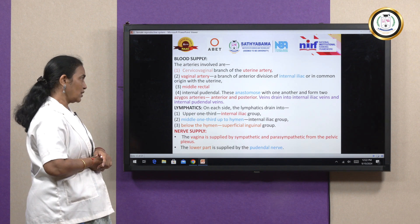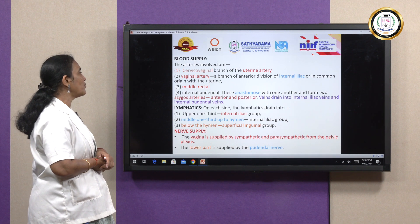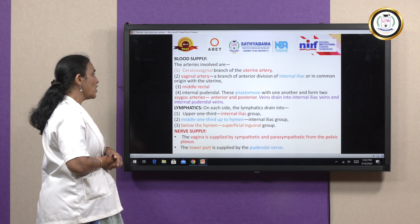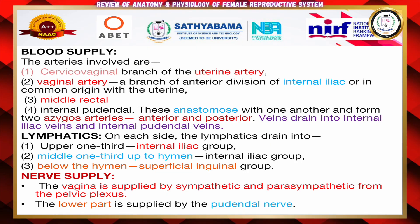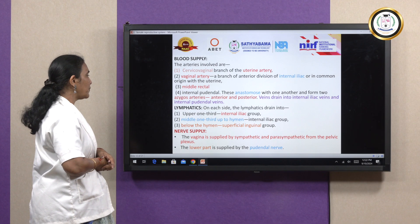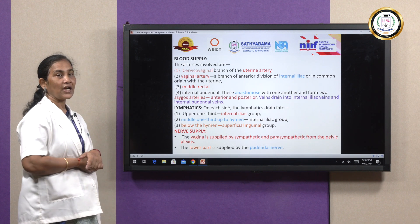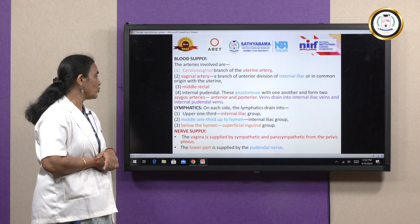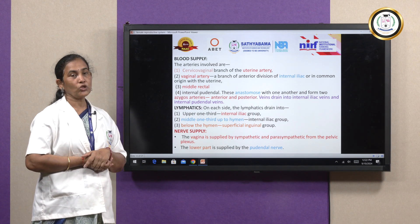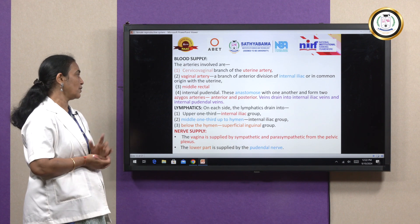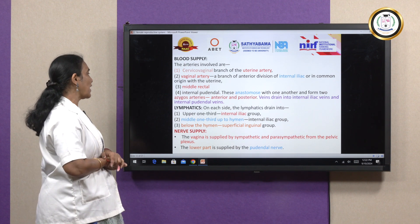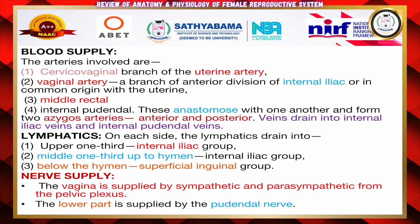For lymphatic drainage of the vagina: the upper one-third drains to the internal iliac group, the middle one-third to the hymen drains to the internal iliac group, and below the hymen drains to the superficial inguinal group. The nerve supply to the vagina is from the sympathetic and parasympathetic from the pelvic plexus, and the lower part is supplied by the pudendal nerves.